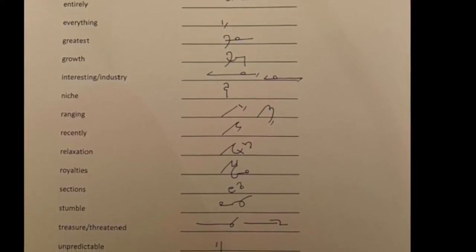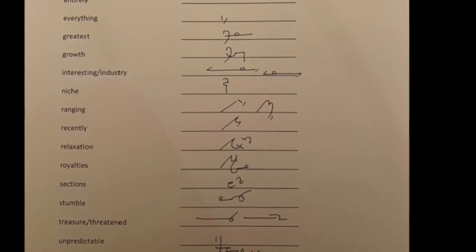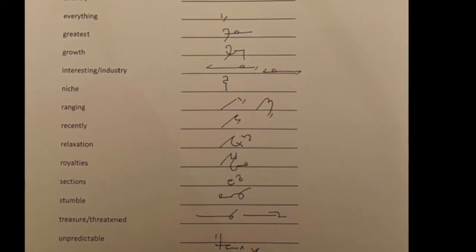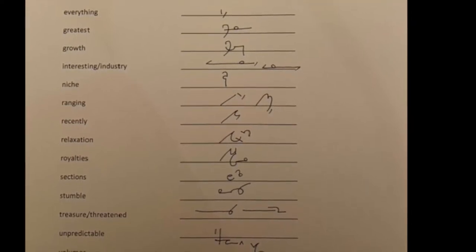Treasure and threatened. TR blend is also THR blend. In treasure, S goes outside the angle.